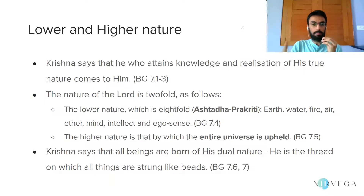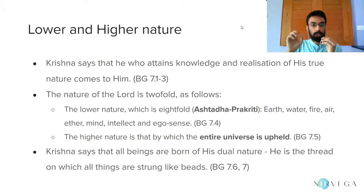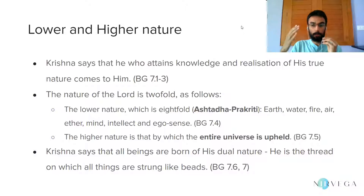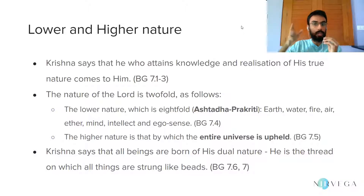The chapter begins with Krishna saying that he who attains knowledge and realization — Jnana and Vijnana — of his true nature comes to him and attains the Supreme. The nature of the Lord is two-fold. Krishna says his nature has two aspects. The lower nature is eight-fold, called Ashtada Prakriti. Its eight aspects are the Panchamahabhutas — earth, water, fire, air, and ether — which make up the physical universe, and the three components of the mind: Manas, Buddhi, and Ahankara, which make up the mental universe.